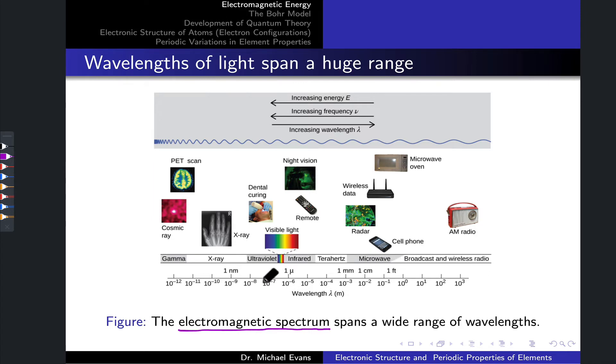As we move to the left from the visible region, we have shorter wavelengths and higher frequencies: ultraviolet light, x-rays, and gamma rays.